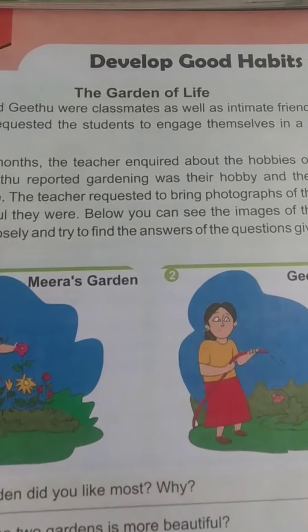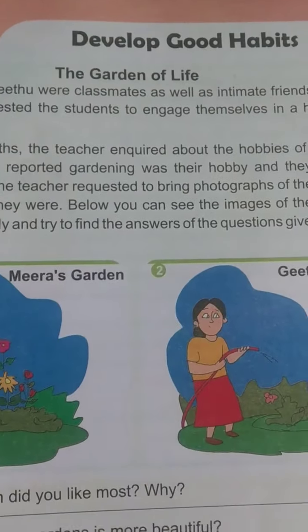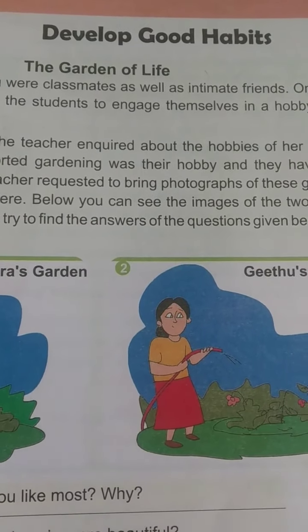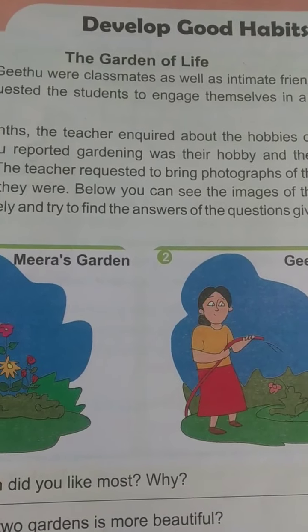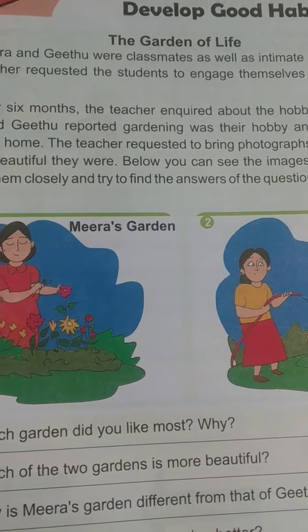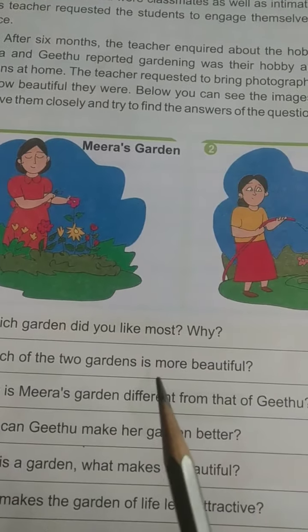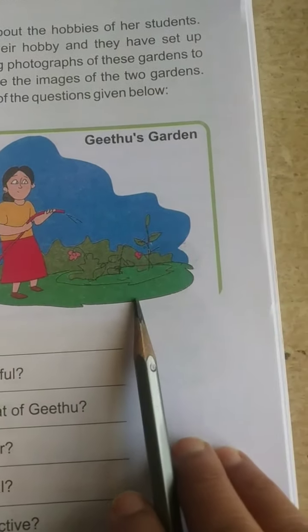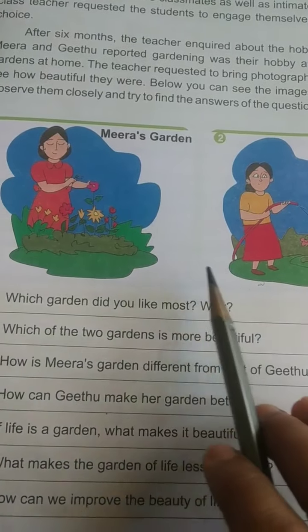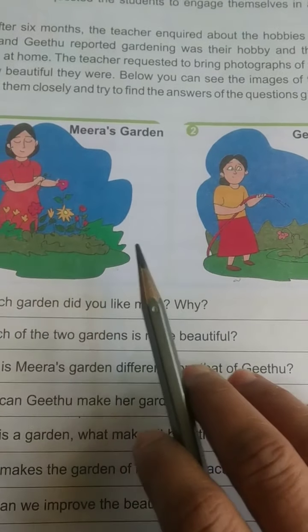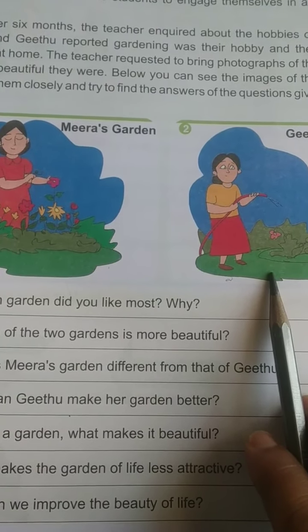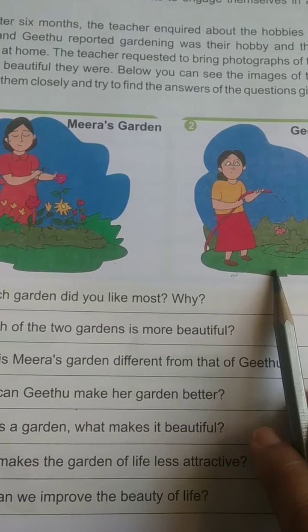Let's start with Unit 1: Develop Good Habits. Each and everybody knows about good habits — which sort of good habits you should include in your daily lifestyle. In this chapter, they have given one example with a story called 'The Garden of Life.' You are able to see two pictures — Meera's garden and Gitu's garden. These two are friends, and the story shows how they manage their garden. The message is about which sort of habits we should develop.